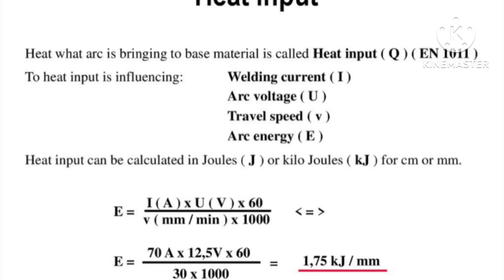This is the basic formula. For one example, it is calculated with amps of 70 and 12.5 as the voltage. Below that is the travel speed. Thus, we have to calculate the heat input value.